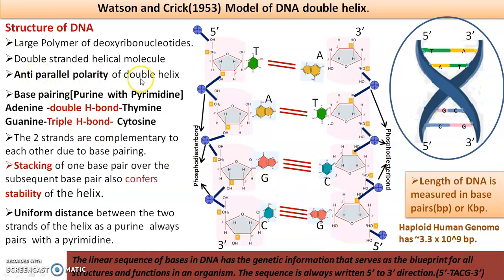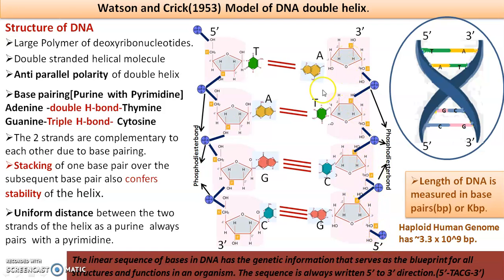Anti-parallel polarity we already discussed — anti means against. One strand is 5' to 3'; the other is going against it, 3' to 5'. But remember, polymerization always occurs in 5' to 3' only. That is anti-parallel.